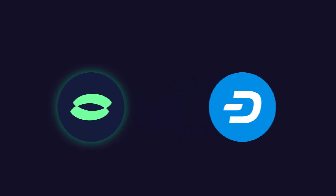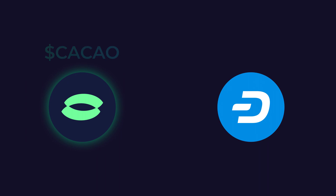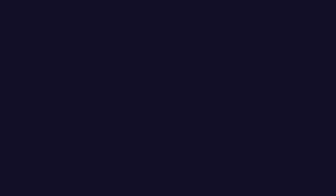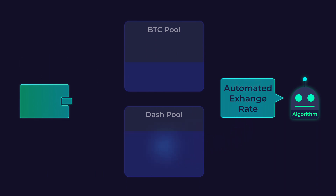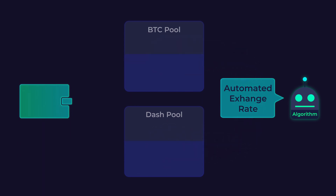All Maya asset pools are composed of a 50-50 split of two assets: the network's native token, Cacao, and a cryptocurrency such as Dash or Bitcoin. If you want to swap some Bitcoin for Dash, you send Bitcoin into the Bitcoin pool with directions to swap for Dash, then Dash automatically comes out of the Dash pool and is sent to you, with Cacao shuffling around to rebalance the pools.